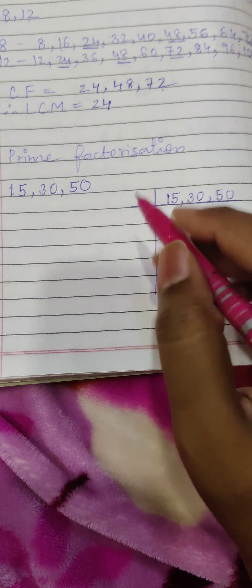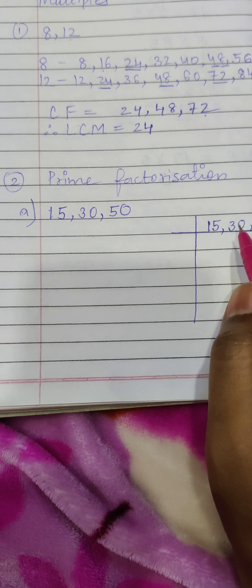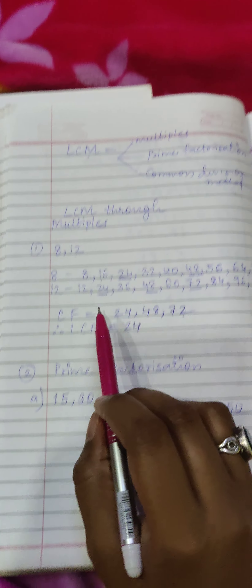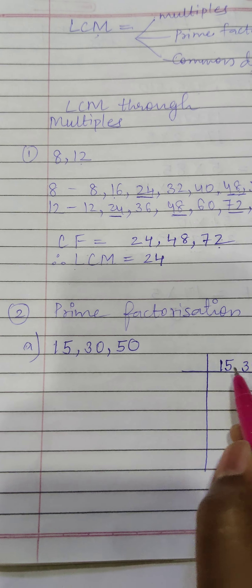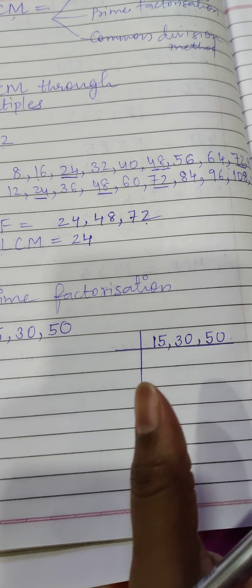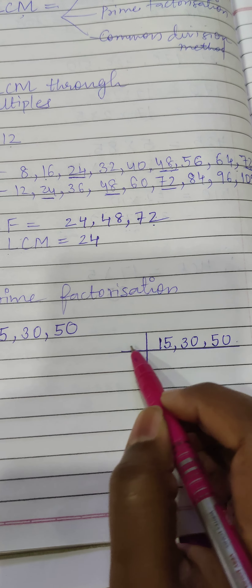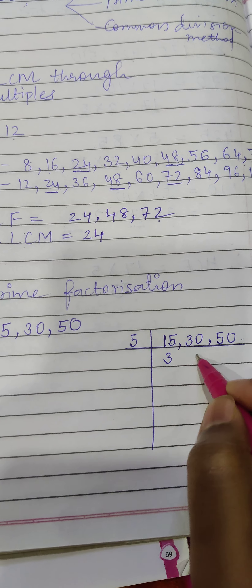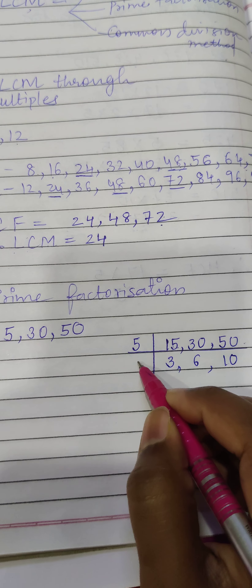Next is prime factorization — I haven't solved this yet, let's do it now. The best method to find LCM is prime factorization or common division — both work the same way. I am going to take the numbers 15, 35. I will take a number that can divide all the given numbers — I take 5. 5 goes into 15 as 3, 5 sixes are 30, 5 ones are 5, 5 tens are 50.